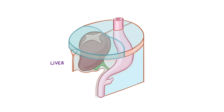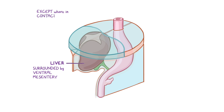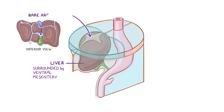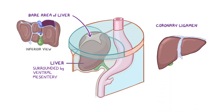The liver is completely surrounded by ventral mesentery, except on its superior surface where it is in direct contact with the inferior surface of the diaphragm, and this is called the bare area of the liver. Then there are the coronary ligaments, which are the peritoneum reflection from the inferior surface of the diaphragm.